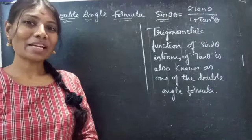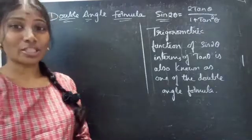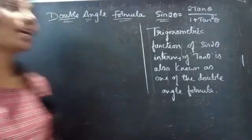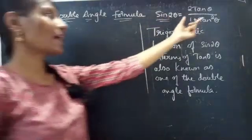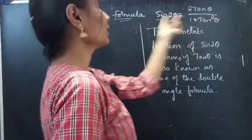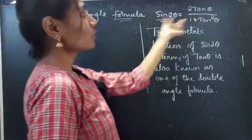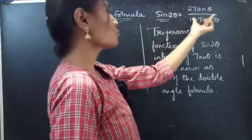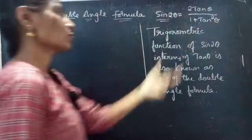Hello everyone, this is Jai Kalpana here. In this video we are going to derive a double angle formula in terms of tan theta. We are going to derive sin 2θ = 2tanθ / (1 + tan²θ).